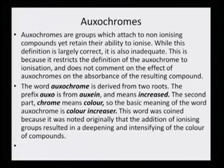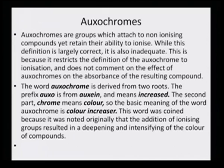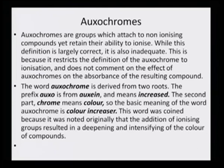There is also something called oxochromes present in the dye molecule, the color-absorbing molecule. Chromophores are groups which attach to non-ionizing compounds yet retain their ability to ionize. While this definition is largely correct, it is also inadequate, because it restricts the definition of the oxochrome to ionization and does not comment on the effect of oxochromes on the absorbance of the resulting compound. Ionization does not really play a role in color production — so this is not a very appropriate definition for oxochrome.